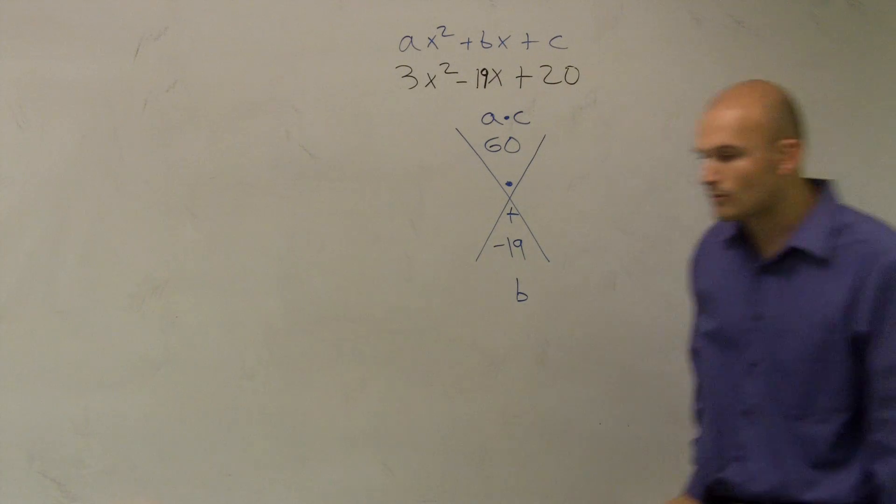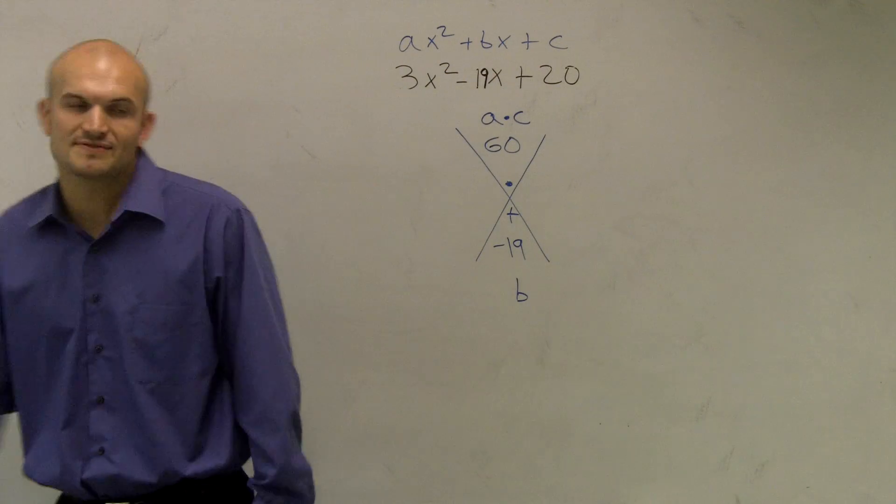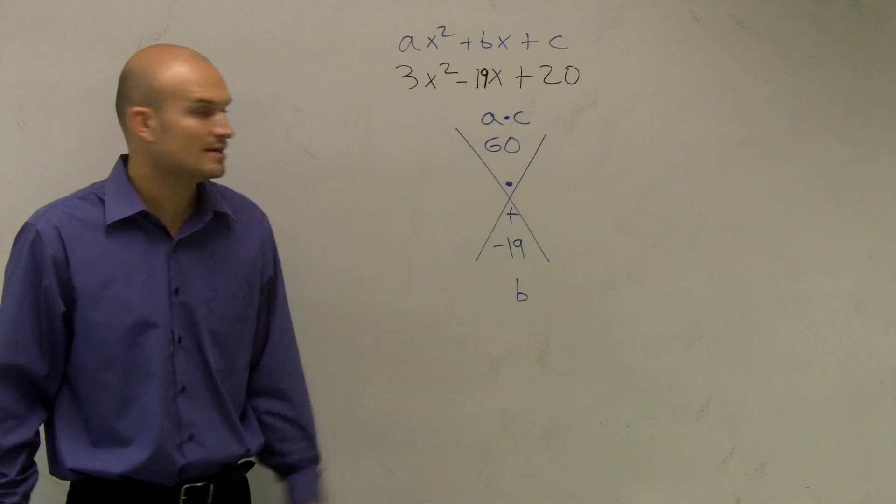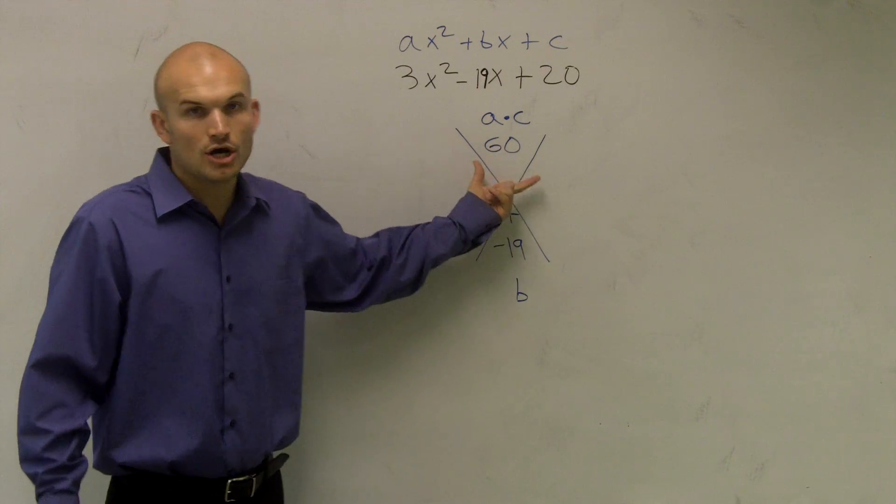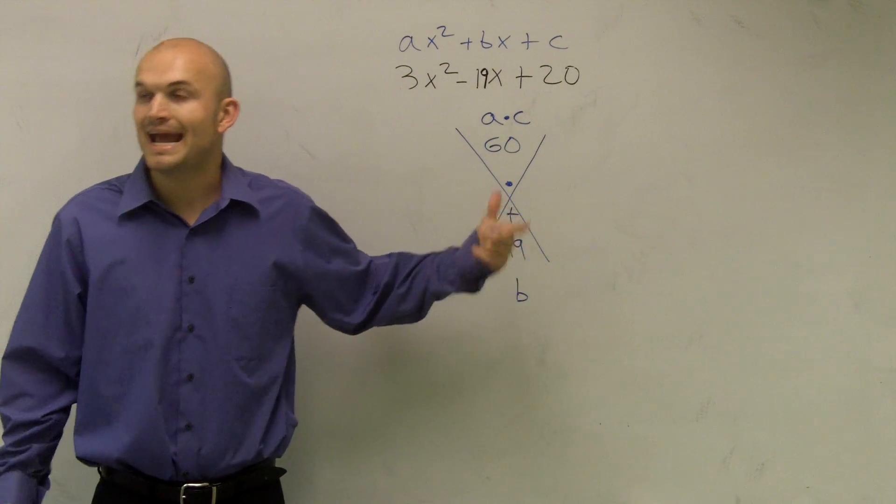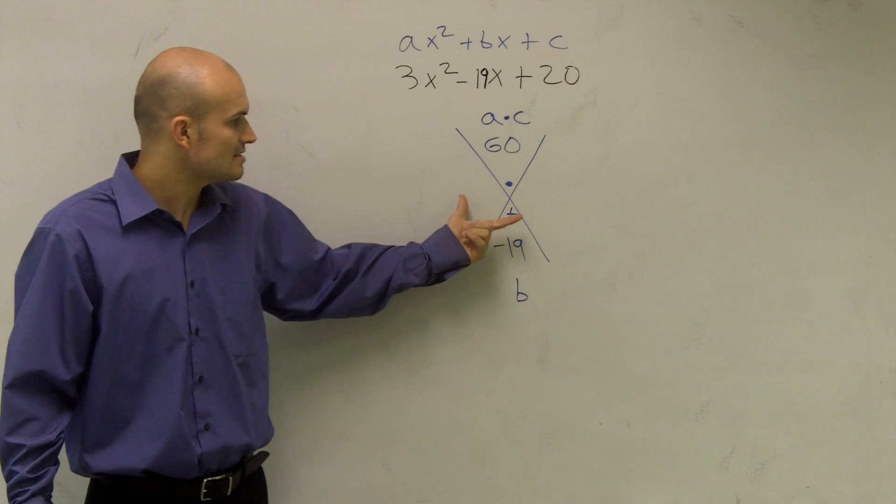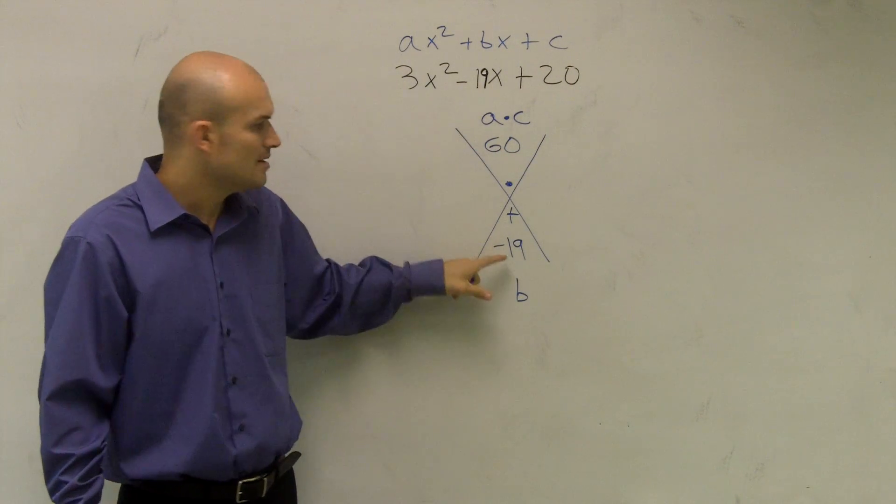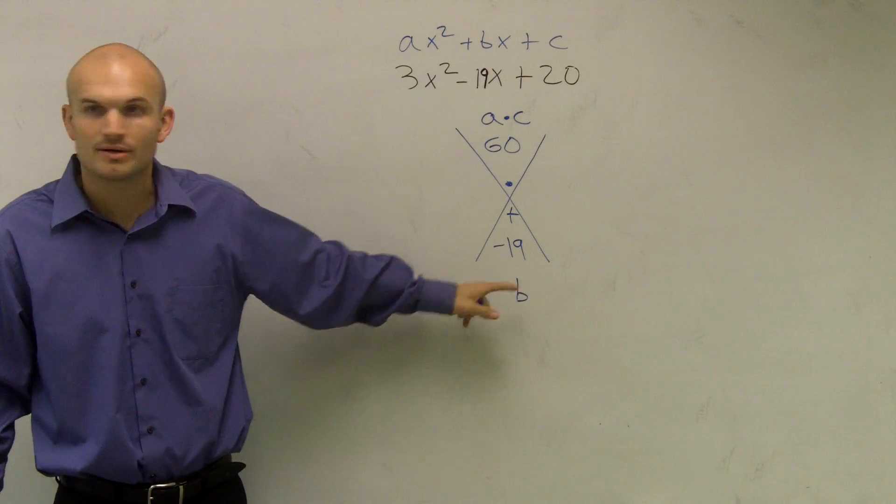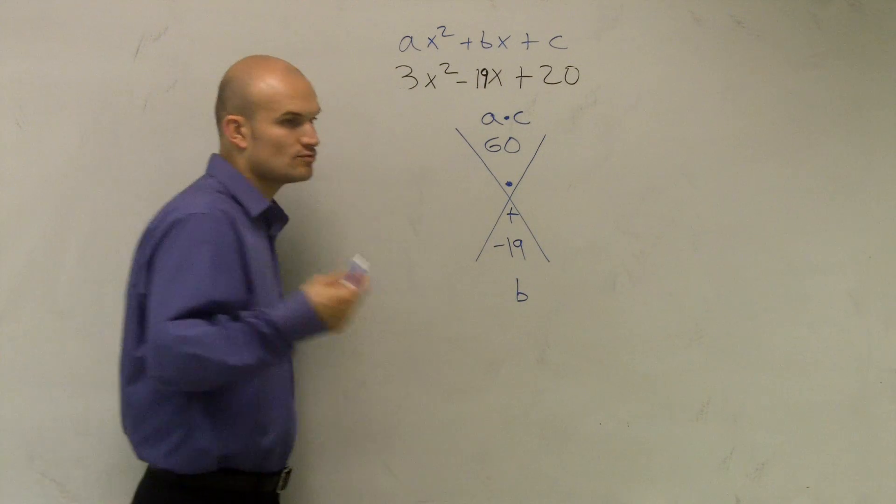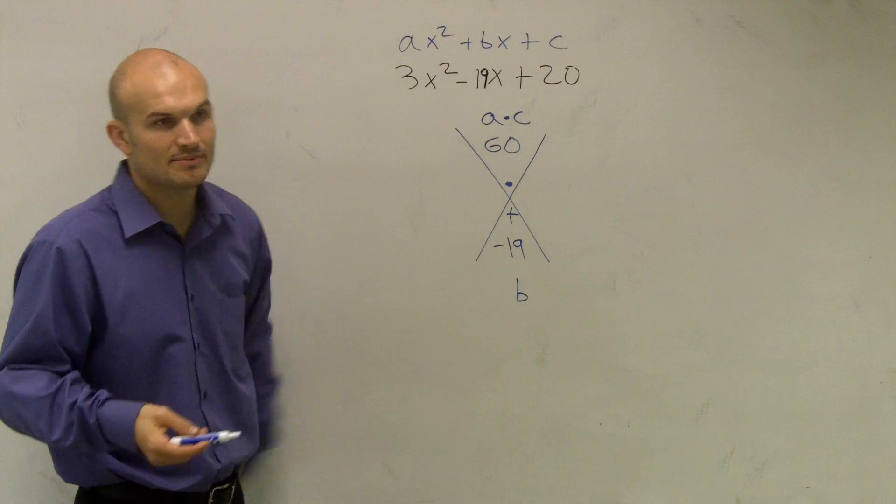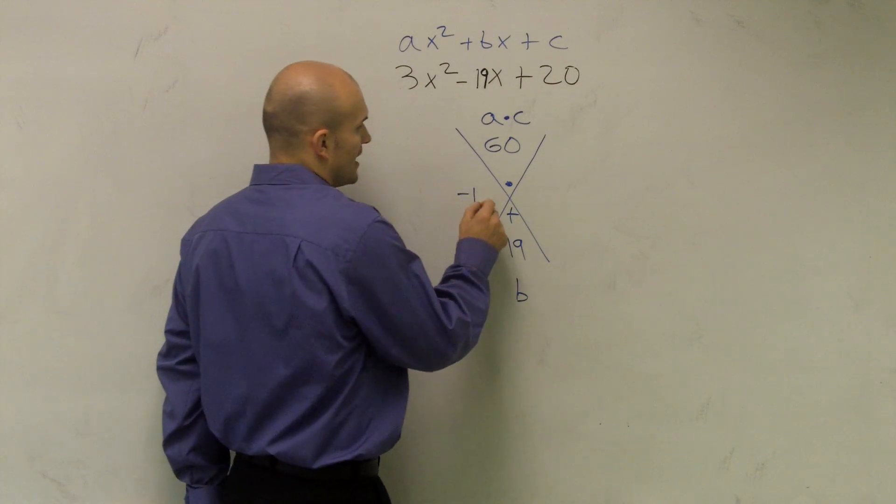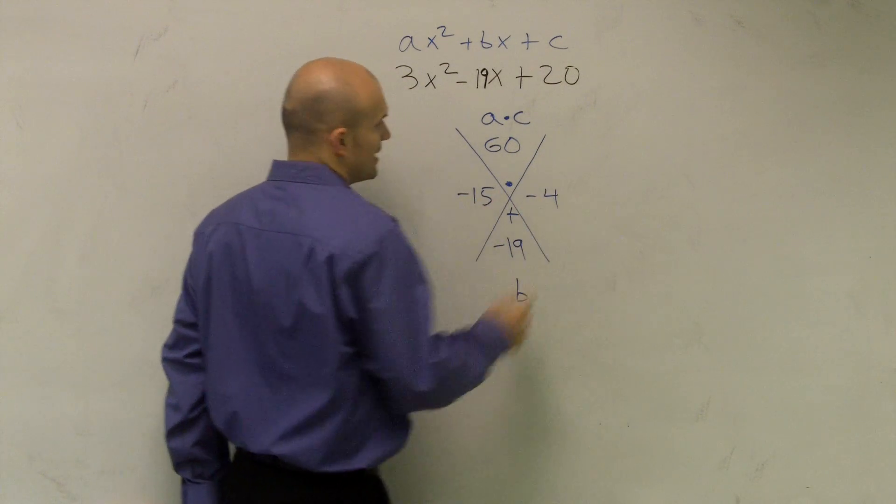So what I need to do is determine what two numbers multiply to give me positive 60, but add to give me a negative 19. Think about this. We know our two numbers that multiply to give us 60 have to be negative, because two positive numbers will multiply to give you a positive 60, but they're not going to add to give you a negative number. So when I start thinking about this, two negative numbers that multiply to give me a positive 60, I come up with a negative 15 and a negative 4.